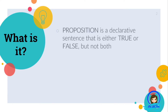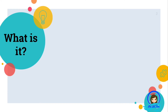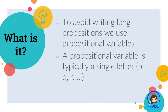If a proposition is true, then its truth value is true, which is denoted by the letter T. Otherwise, its truth value is false and is denoted by F. To avoid writing long propositions, we use propositional variables. A propositional variable is typically a single letter, such as P, Q, R, and so on.